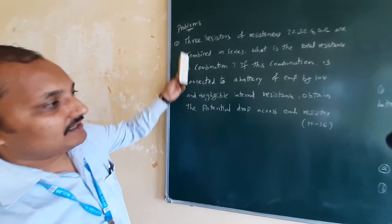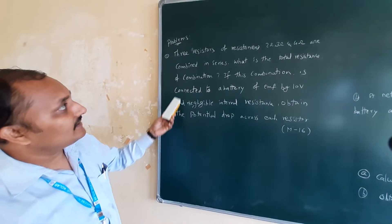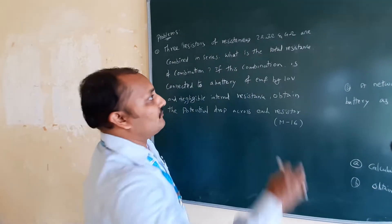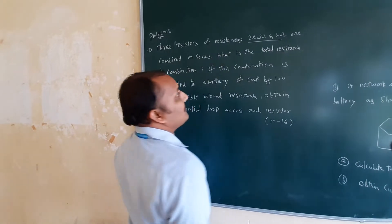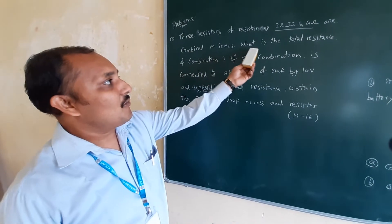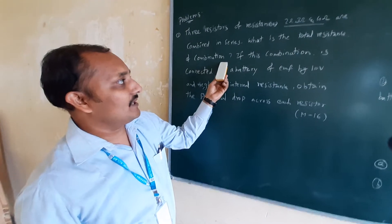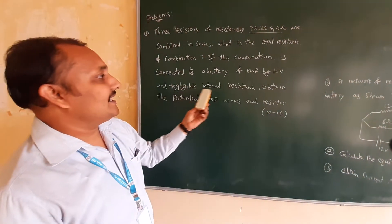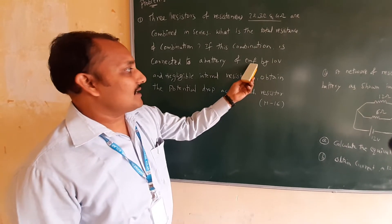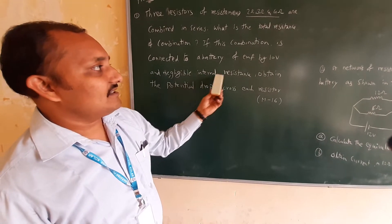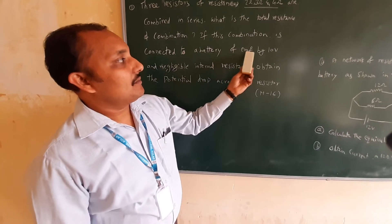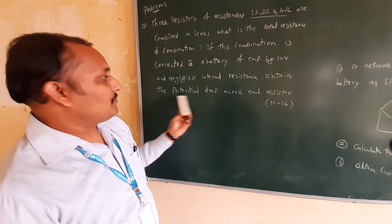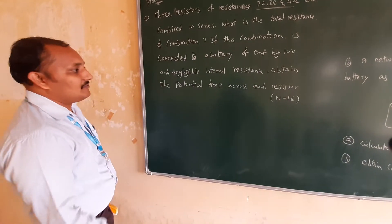Let's see some simple problems from previous years. Three resistors of resistances 2 ohm, 3 ohm, and 4 ohm are combined in series. What is the total resistance of the combination? Next, if this combination is connected to a battery of 10 volts, what is the potential drop across each resistor?